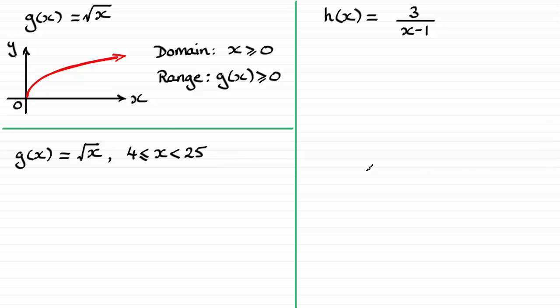Now in this next example I've got g of x equaling root x again. Only this time x is defined for greater than or equal to 4 but less than 25. So what's this graph going to look like? Well if we were to copy it back in, we know it looks something like this. But if we restrict the domain, then I'm going to be going from x is 4, so just mark that in, let's suppose that's 4, up to 25. Let's say that that is 25.